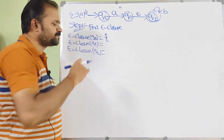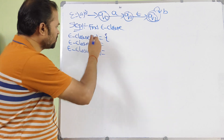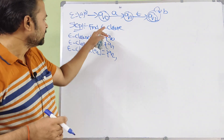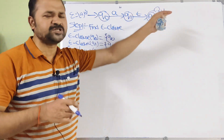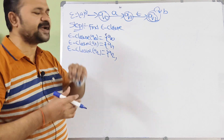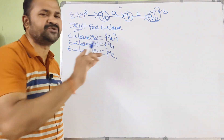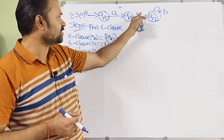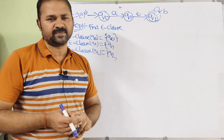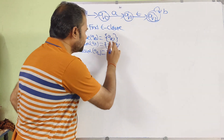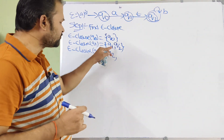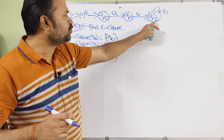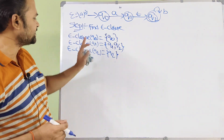Let us calculate epsilon closure of Q0. Epsilon closure of any state includes itself. Since no epsilon transition is applied on Q0, epsilon closure of Q0 is {Q0} only. For Q1, there is an epsilon transition: applying epsilon on Q1 takes us to Q2, so epsilon closure of Q1 is {Q1, Q2}. For Q2, there is no epsilon transition, so epsilon closure of Q2 is {Q2} only. This completes step 1.